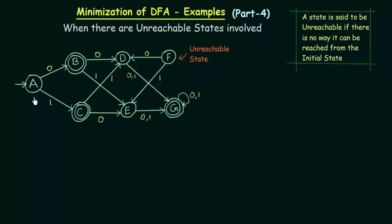Here we have our initial state as A, and if you observe carefully you see that there is no way in which you can reach F from this initial state A. There is another way to easily identify an unreachable state: unreachable states will only have outgoing transitions and will not have incoming transitions. If you observe here, the state F has outgoing transitions for 0 and for 1, but there are no incoming transitions — nothing comes into F. That is how you can easily identify an unreachable state.